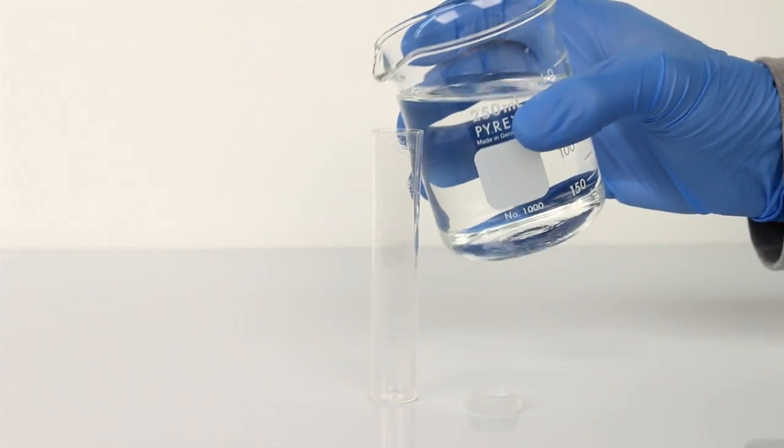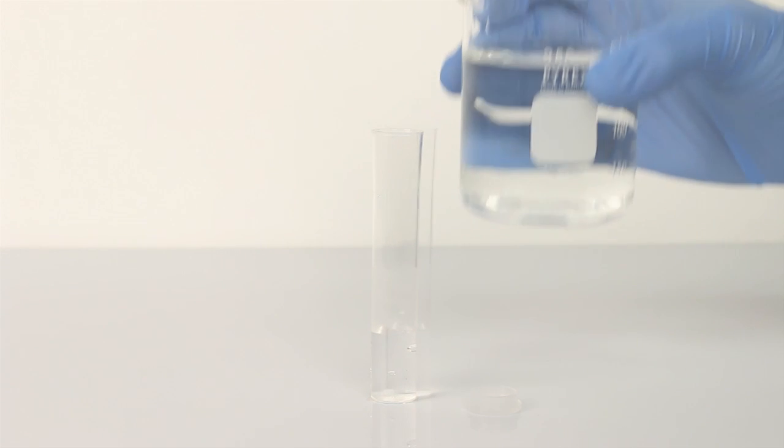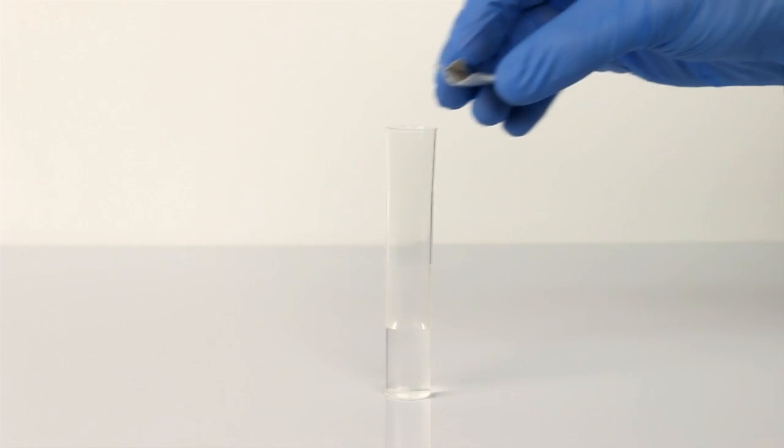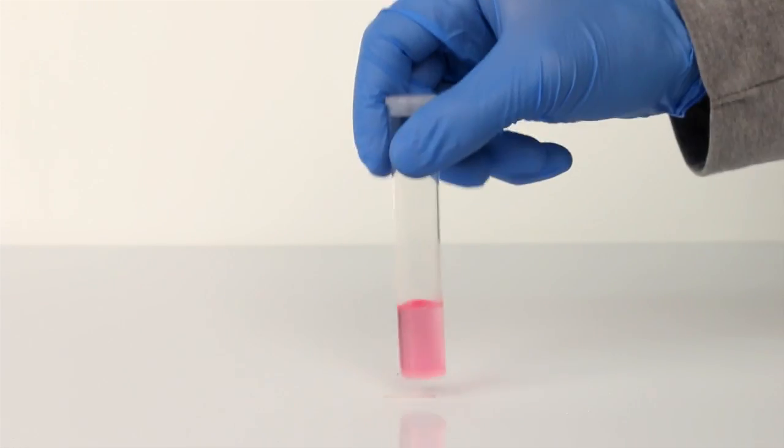Fill the other viewing tube to the 5 ml mark with the sample. Add the contents of a DPD Free Chlorine Reagent Powder Pillow. Swirl to mix.